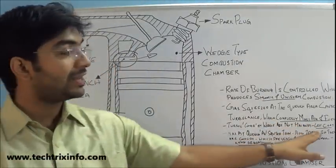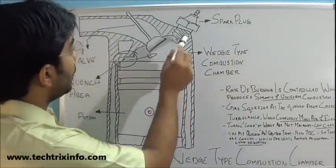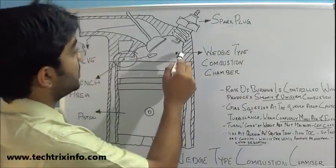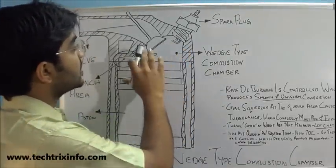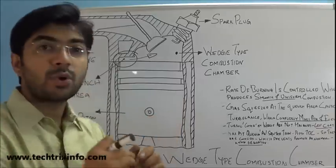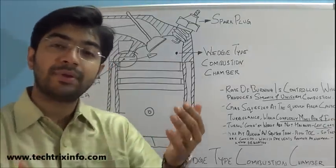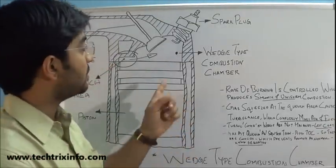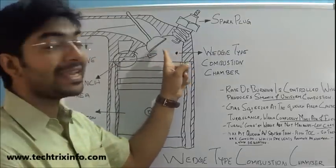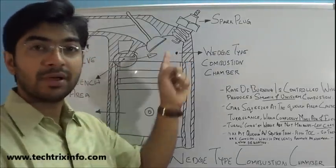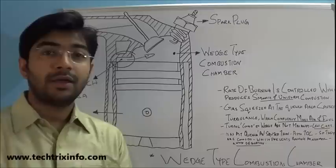How is the less cost achieved? The inside of the wet state combustion chamber's wedge shape is not being machined, so that machining cost can be reduced. Due to avoiding machining inside the chamber, the production cost of the engine can be reduced.